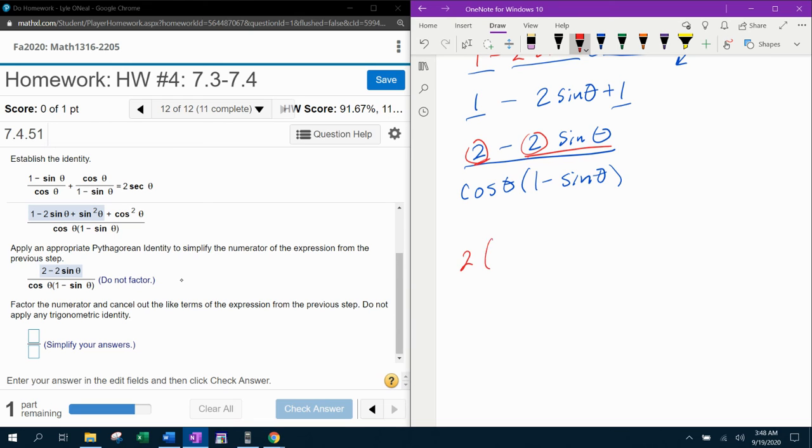So that means I'm going to, in the numerator, I'm going to factor out the two, which means I'm going to divide both of those terms by two. And that will leave me one minus sine theta all over the common denominator of cosine theta one minus sine theta.